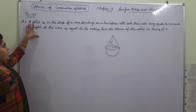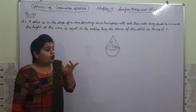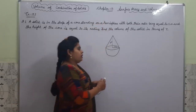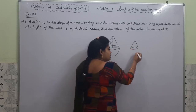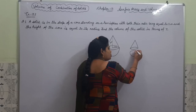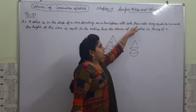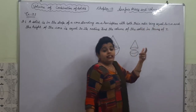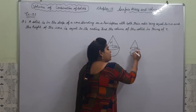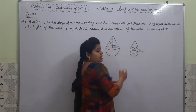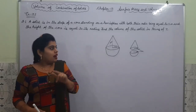In the first question, a solid is in the shape of a cone standing on a hemisphere. This is a cone standing on a hemisphere. With both their radii being equal to 1 cm — the radius of the cone is 1 cm as well as the radius of the hemisphere is 1 cm.